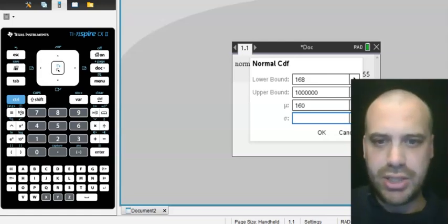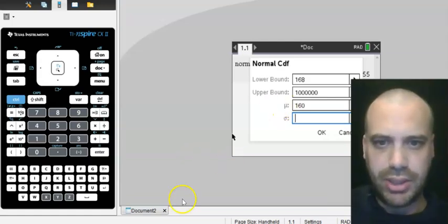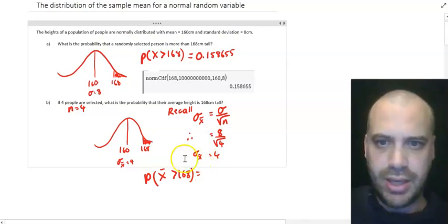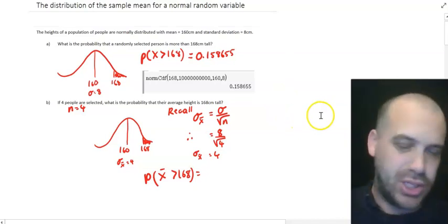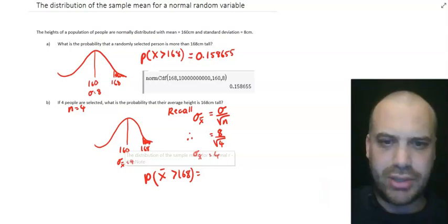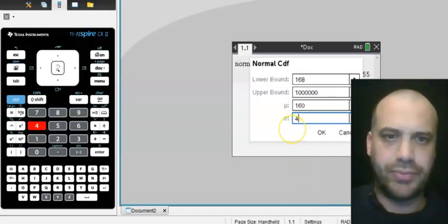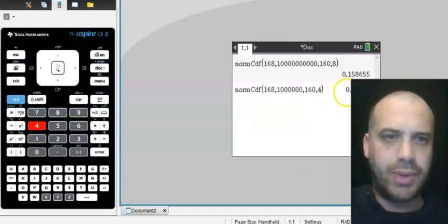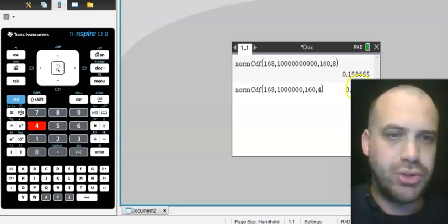The standard deviation is equal to, let's take another look at our answer there. Our standard deviation of our sample mean was 4, not 8, which is what the population was. I'm really hammering home that point because it's really the only thing that's new and interesting here. And we get an answer of 0.02275.